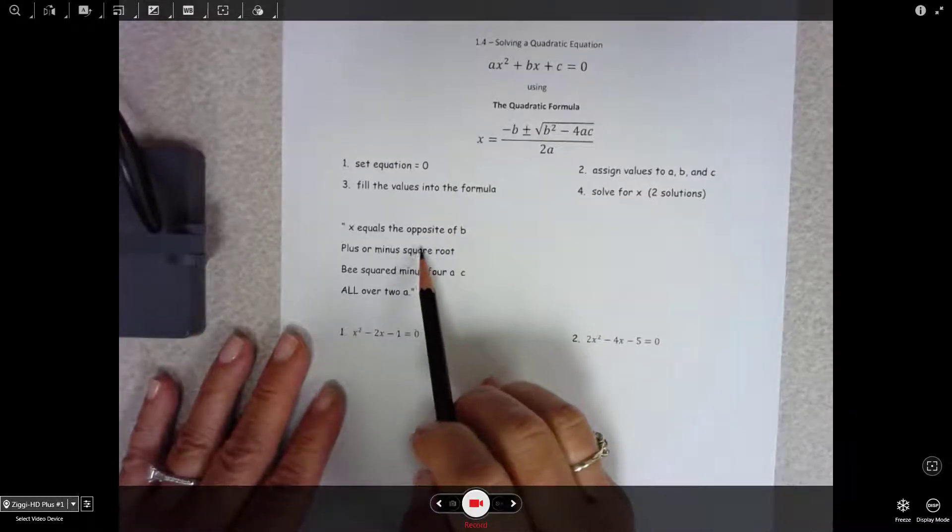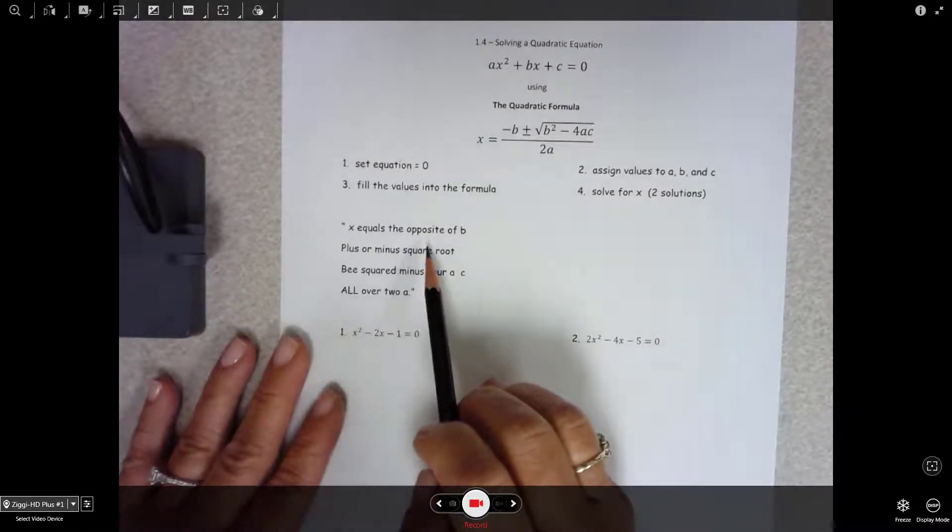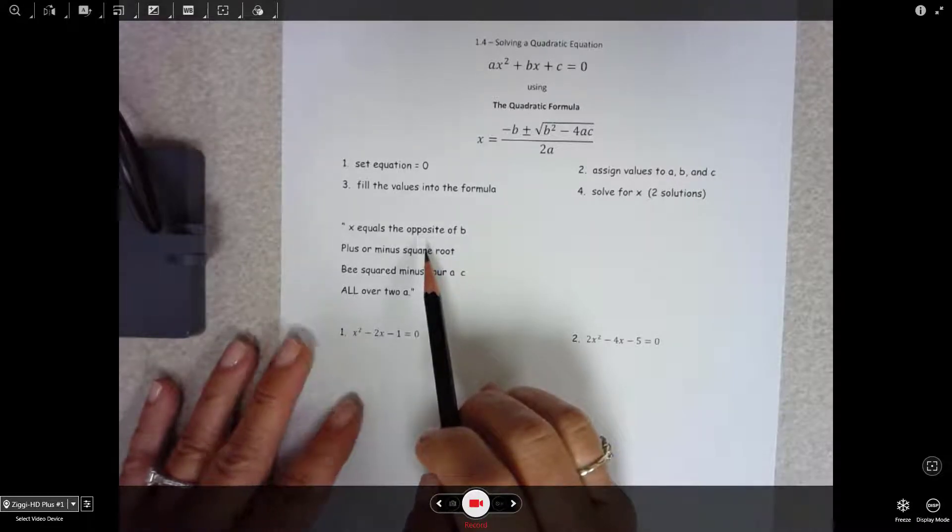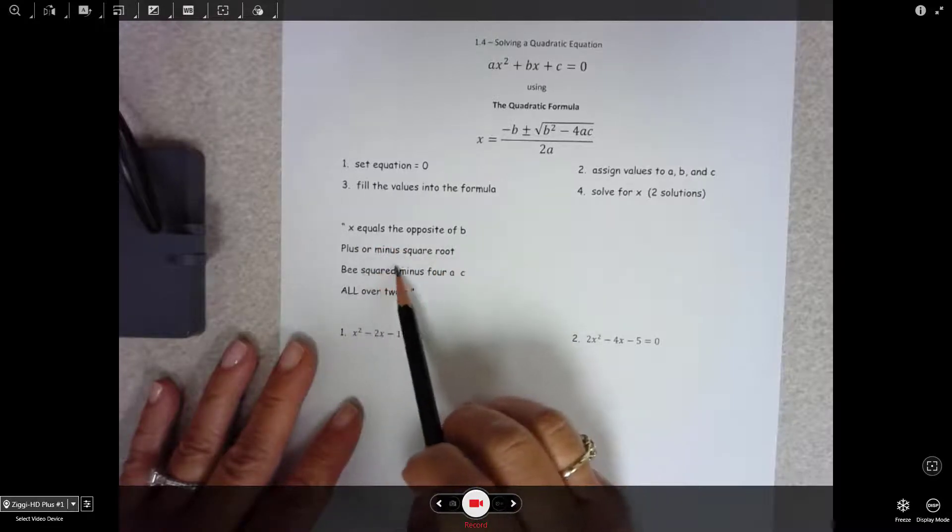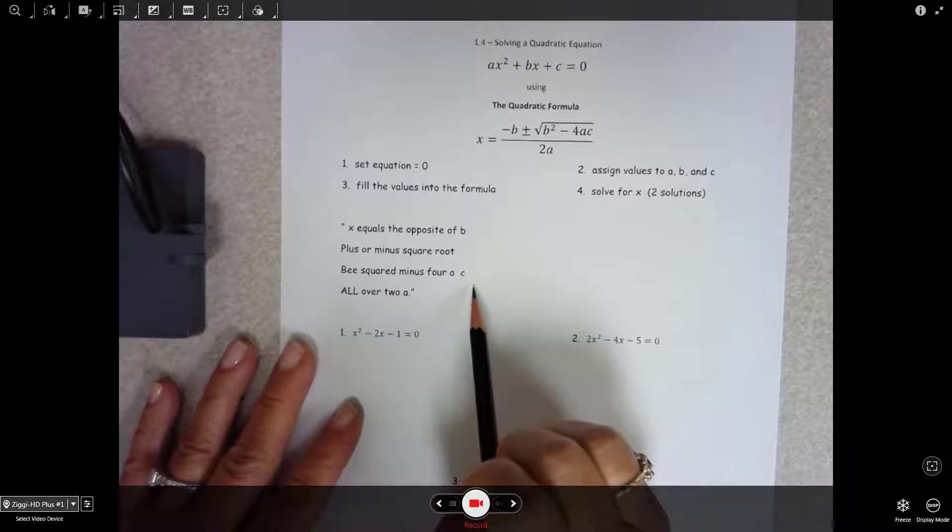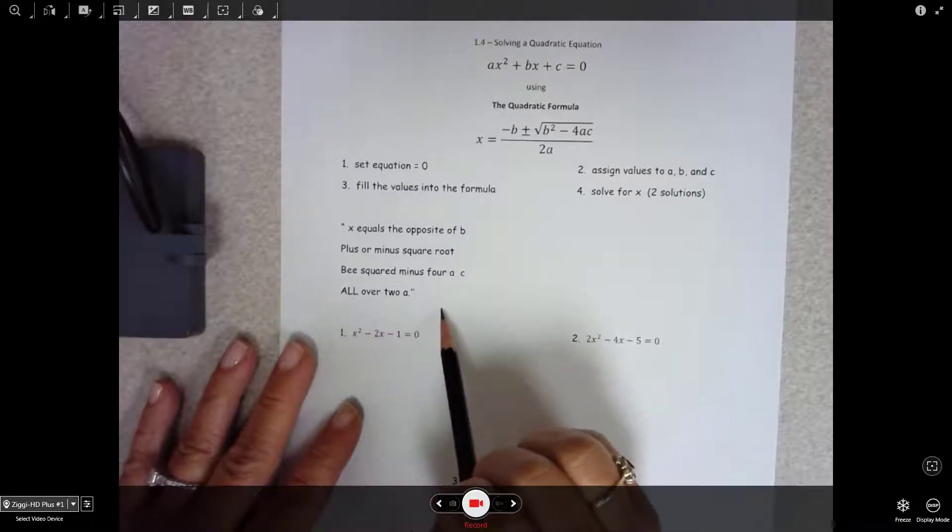You can do the little song to Pop Goes the Weasel, that's what I sing in class because actually that is easy to remember and everybody can do it. X equals the opposite of B, plus or minus square root B squared minus 4AC all over 2A.